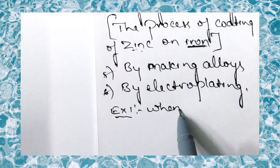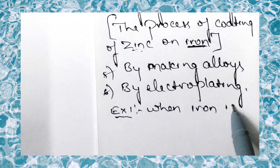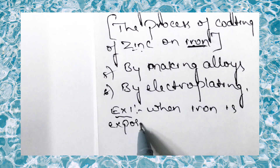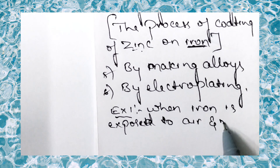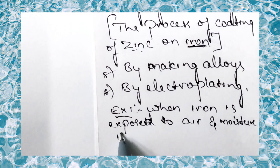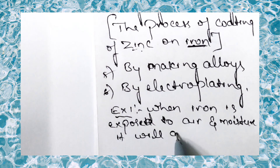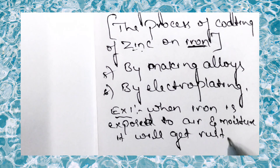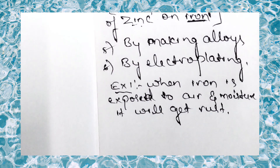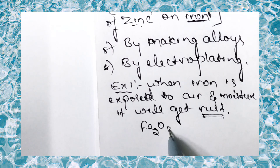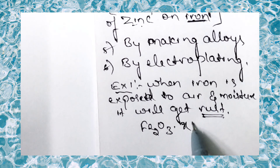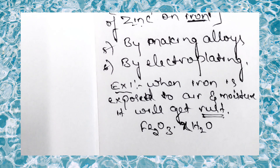The first example of corrosion is rusting of iron. When iron is exposed to air and moisture, it gets rust. The chemical formula for rusting of iron is Fe₂O₃·xH₂O.